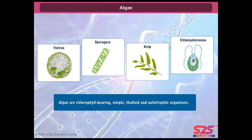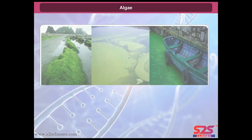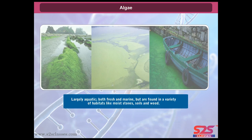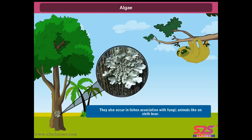Algae are chlorophyll-bearing, simple, thaloid, and autotrophic organisms. They are largely aquatic, both fresh and marine, but are found in a variety of habitats like moist stones, soils, and wood. They also occur in lichen association with fungi, and on animals like the sloth bear.